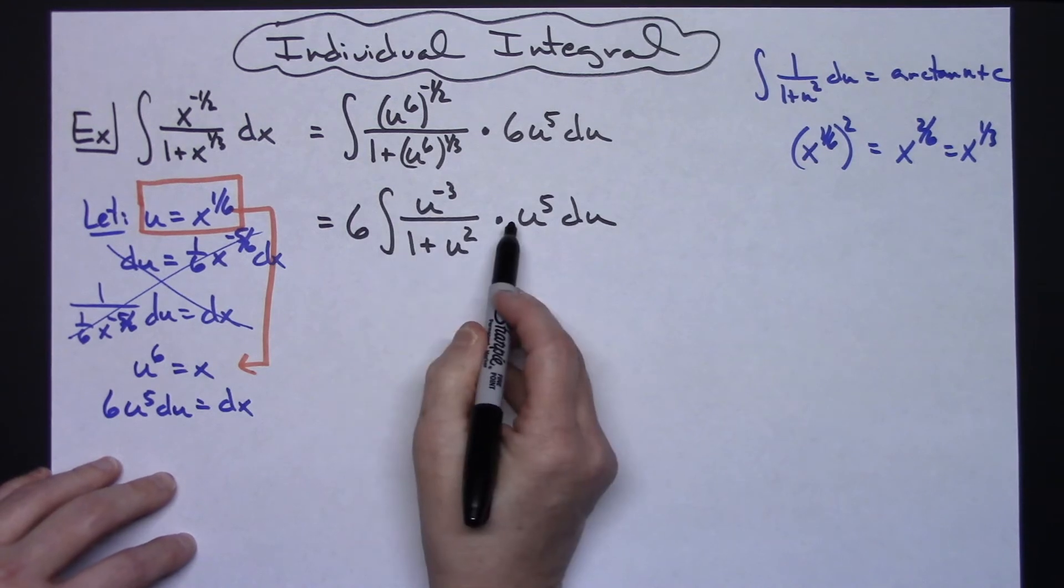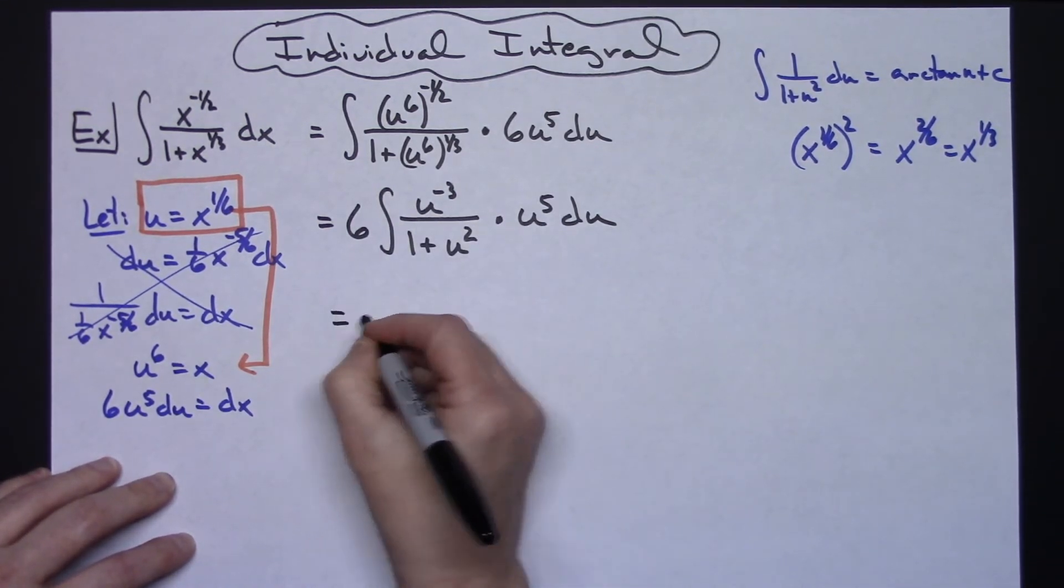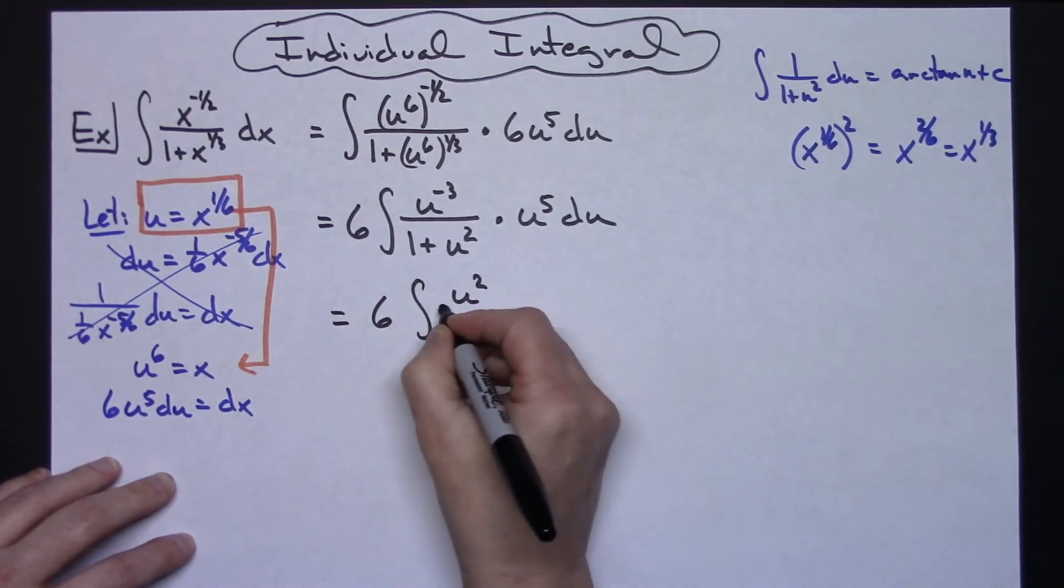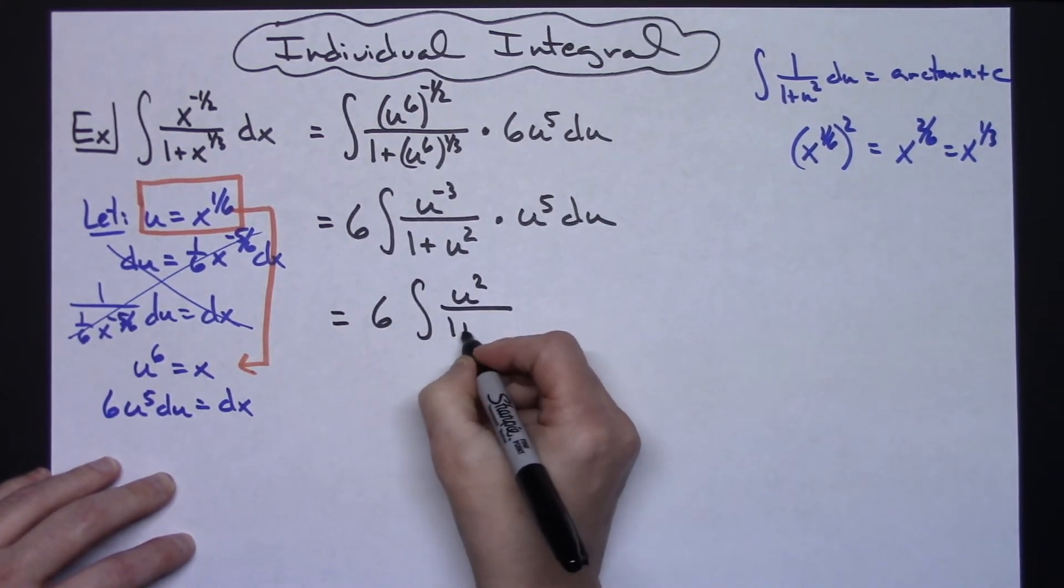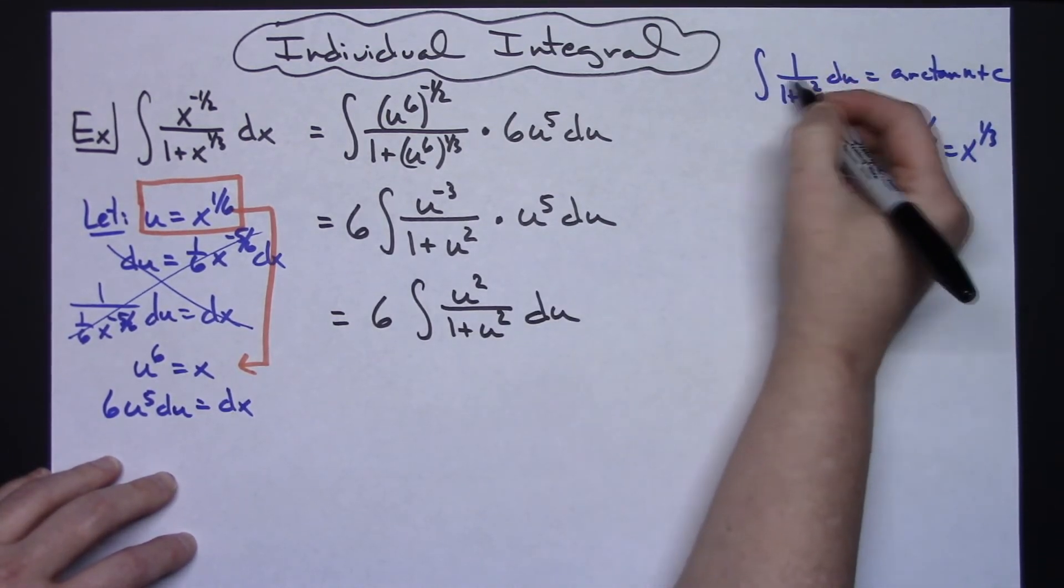Now let's put these two together and multiply those. While applying those, adding those like bases, we're going to have a 6 integral of u squared over 1 plus u squared du. Still not quite to that.